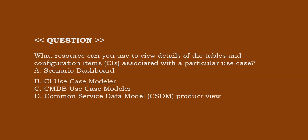Next one, what resources can you use to view details of tables and configuration items associated with a particular use case? Option A, Scenario Dashboard. Option B, CI Use Case Modeler. Option C, CMDB Use Case Modeler. Option D, Common Service Data Model Product View.